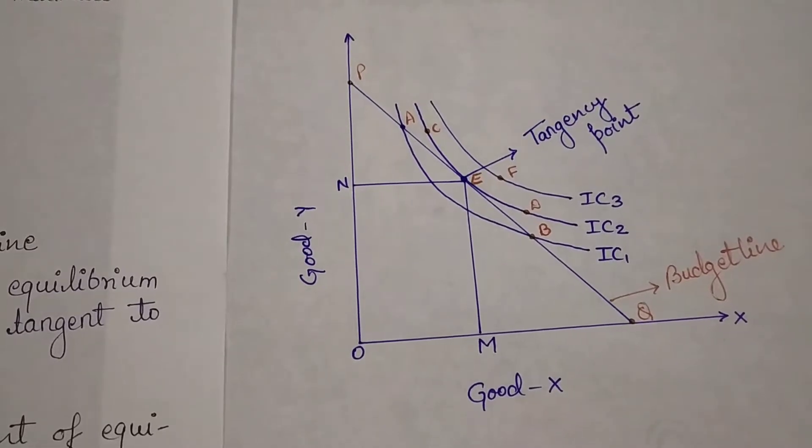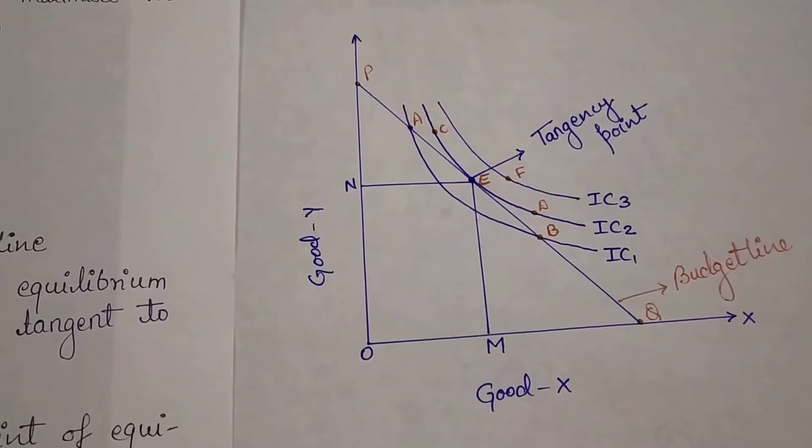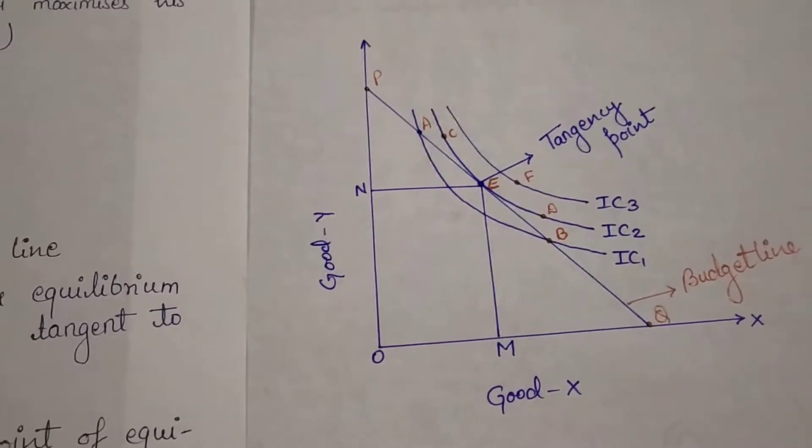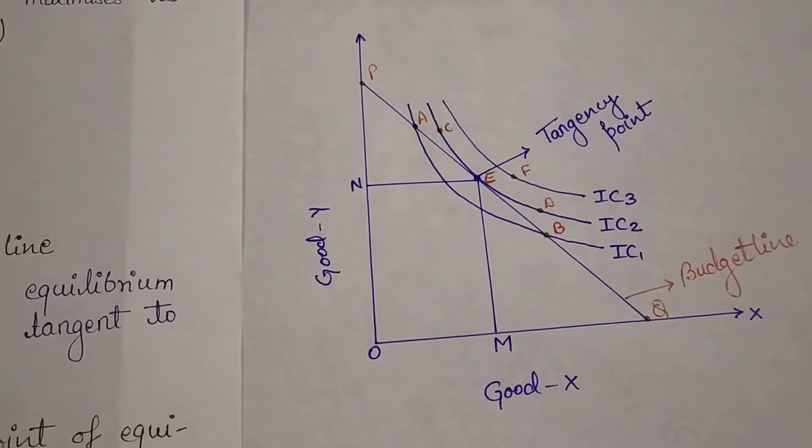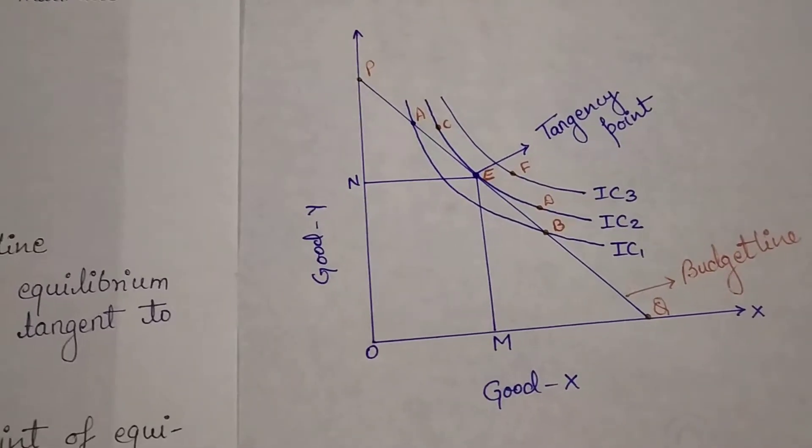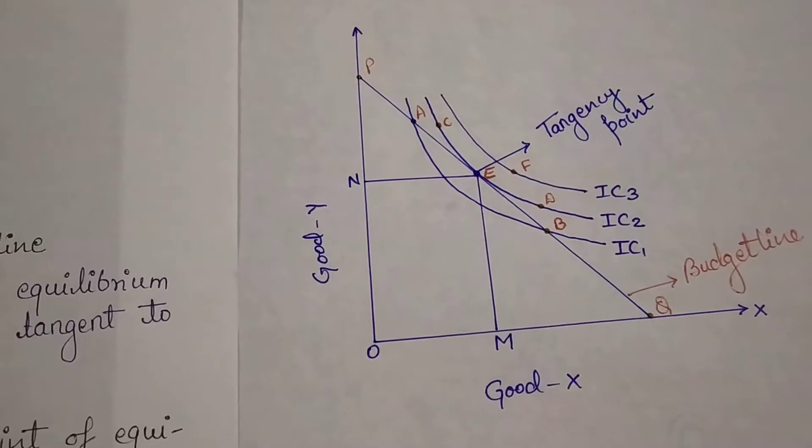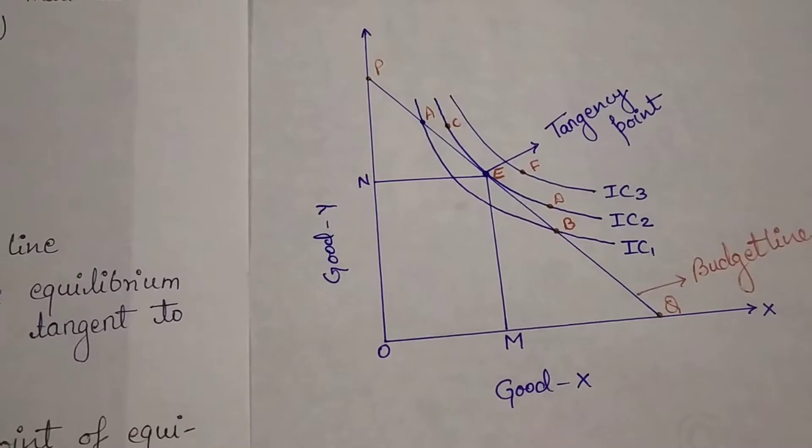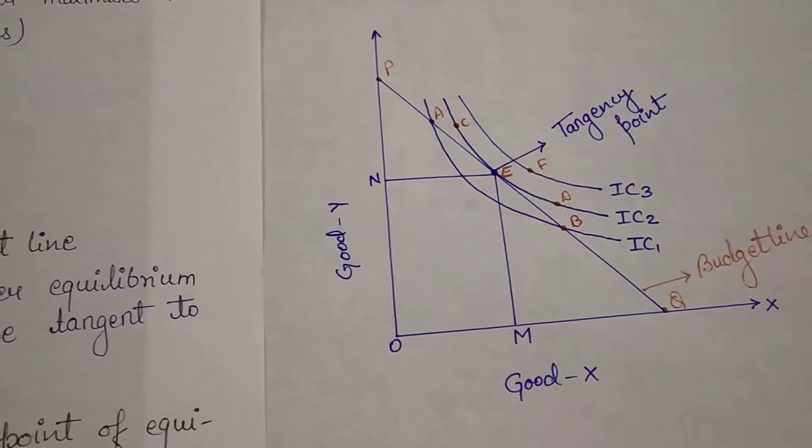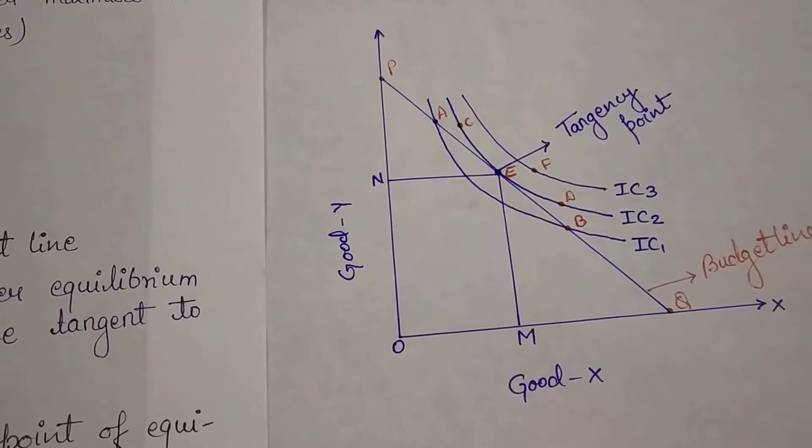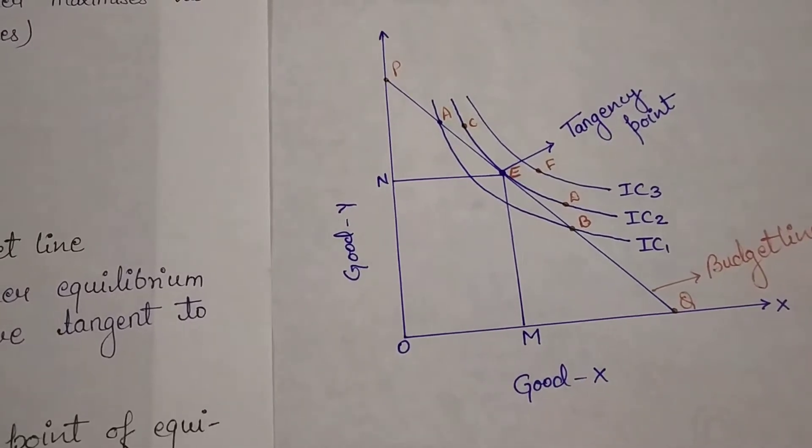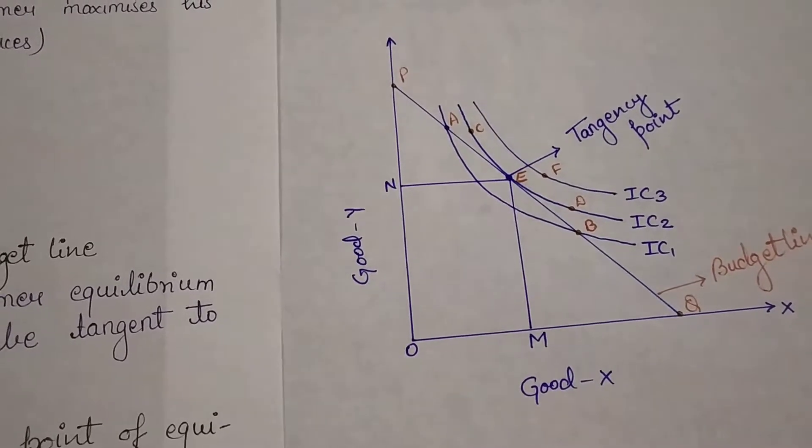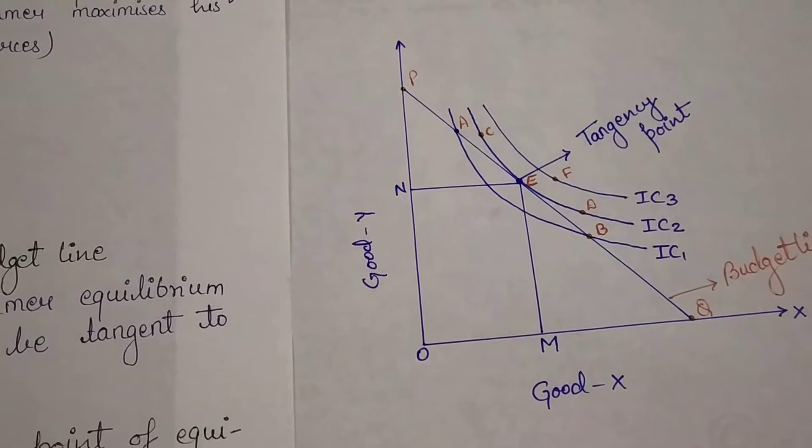Let's talk about IC1. On IC1, there I have mentioned two points A and B. We have to decide if the consumer is attaining equilibrium or not on IC1 curve. But before that, remember that I told you in IC curve properties that higher the IC curve leads to the higher level of satisfaction.